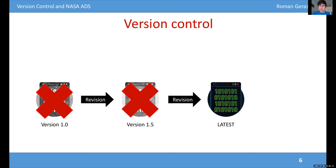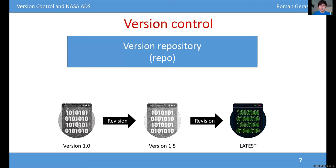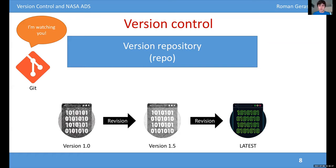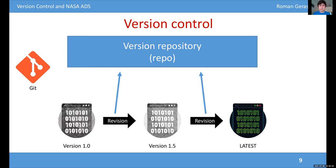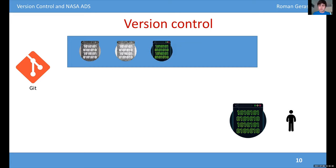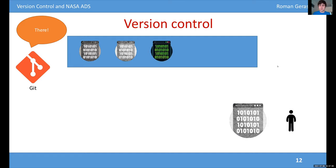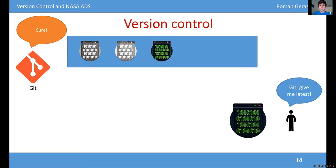The idea behind a version control system is that you create a magic space on your computer called a version repository, or repo for short, and you add a software application such as Git that sits on your computer and watches you code. Every time you produce a new version of your code, Git sees it, grabs that version, and stores every single version in this magic place called the repository. Eventually, you're a developer with your latest version of the code, and Git has the repository with all the previous versions — so they are not lost. You can talk to Git and ask it to give you any of those versions back, such as version 1.5, and then when you're done, ask Git to give you the latest version again.